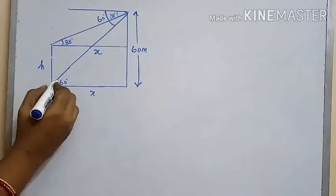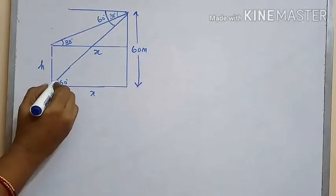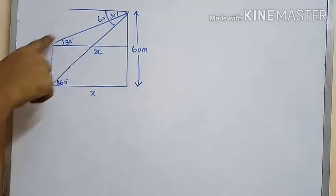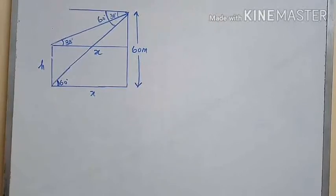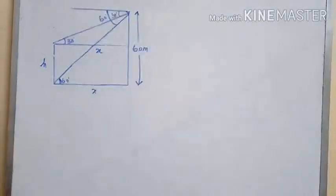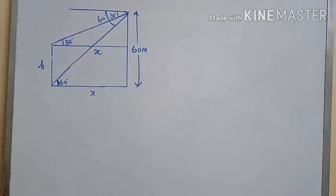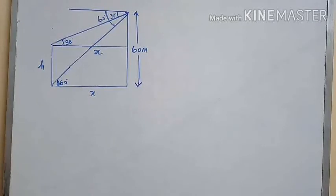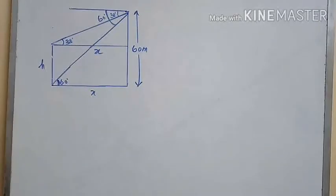From the top of a 60-meter high building, the top and bottom of a lamp post are observed at angles of 38 degrees and 60 degrees respectively. Let the height of the lamp post be H and the horizontal distance be x.